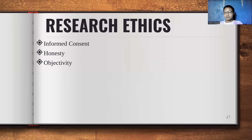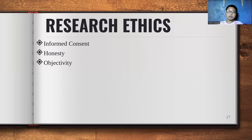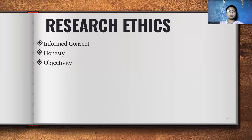Third is objectivity. We researchers must not be biased. For example, when forming your questions, they must be neutral — not leading toward the negative or positive side of the topic. We must be fair, and there must be no biases when treating the information we have gathered.